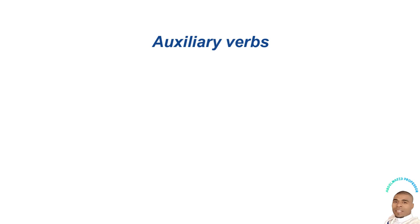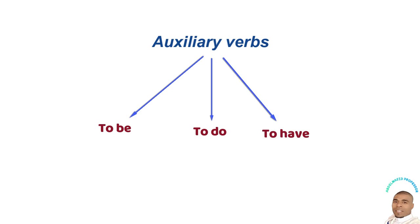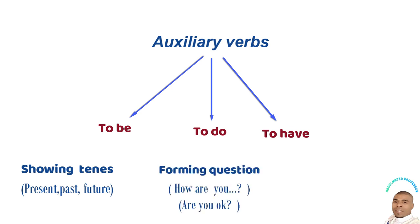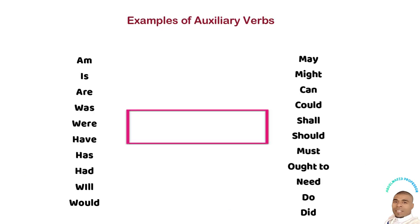An auxiliary verb is a verb — such as 'to be', 'to do', and 'to have' — used with another verb to show tense in a sentence, and also to form a question. For example, 'Are you okay?' — we use the verb 'to be' in the present to form a question. Auxiliary verbs are also used to form negative sentences.